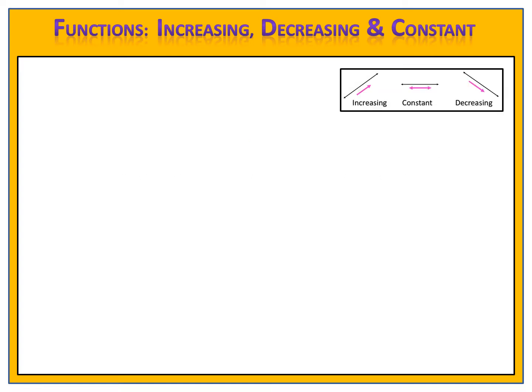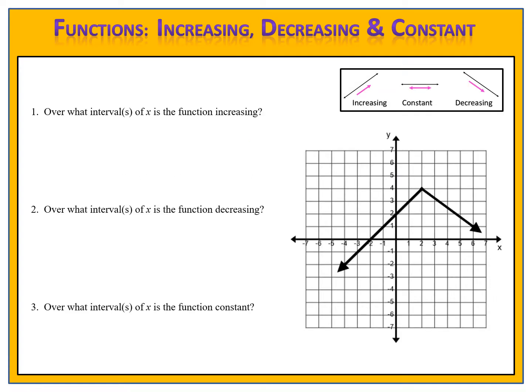Let's begin with an example. Here we have the graph of a function. We want to identify the intervals where the function is increasing, decreasing, and constant. Place your finger on the graph and follow it along from left to right. Notice in the beginning that the graph is increasing — it's going upward. Then it changes direction at the turning point and begins to decrease or go downward. This graph is different from those we've seen previously in that there are arrows at the ends of it. Remember what those arrows mean — they indicate that the graph continues endlessly in those directions.